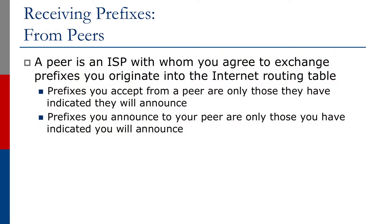We're now going to talk about receiving prefixes from peers. A peer is an ISP with whom you agree to exchange prefixes you originate into the internet routing table. There is usually a pairing agreement between you and your peer, and this means that prefixes you accept from a peer are only those you have indicated they will announce. Prefixes you announce to your peer are only those you have indicated you will announce.